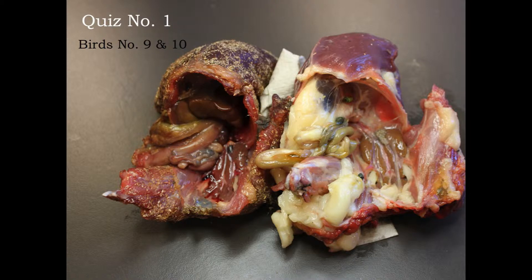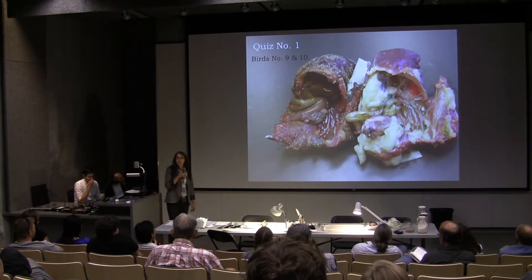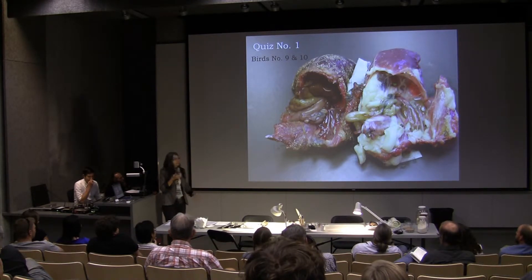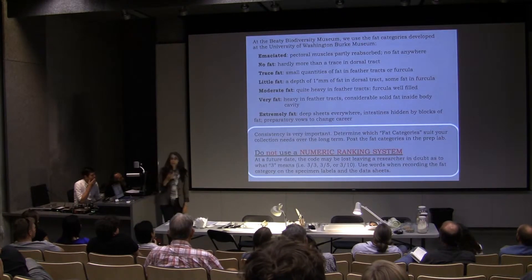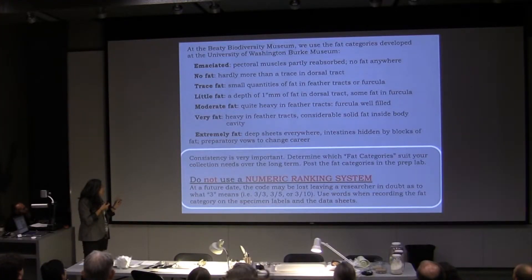This section is a good discussion about condition — both are barred owls, and you can see one is definitely a little fattier than the other. A pet peeve of mine is we've got a lot of birds in the collection labeled 'fat level 2' or 'fat level 4,' and I'm still looking for fat level 6 — I don't know what the scale is. In the fat PowerPoint, there are three different scales: the Winker scale, the LSU scale, and the scale developed by the Burke Museum, which we use here as well. The numeric system is something I'm against, because you don't know what you're doing.